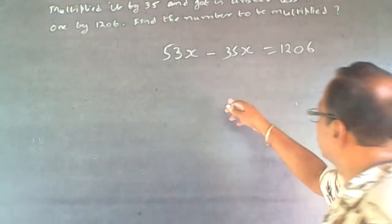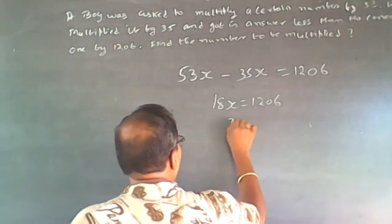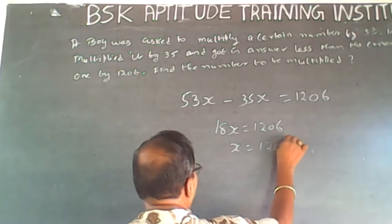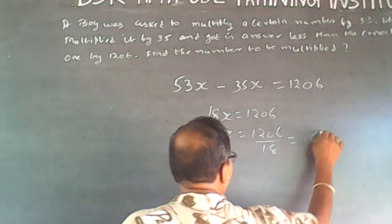So what will happen is, 18x will be equal to 1206, or x will be equal to 1206 divided by 18, which will be equal to 67.